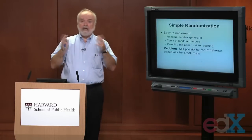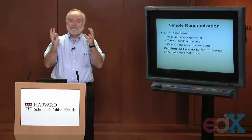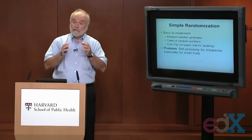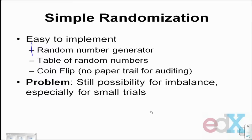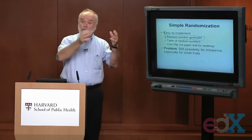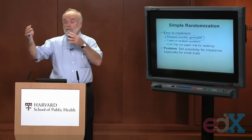How do we do the randomization? Naively, I've been describing an investigator flipping coins in the back of the room. In practice, that's not how it's done. It's done using a computer package to generate random numbers. If a randomly generated number is odd, that person might be assigned to the new treatment; if it's even, to the standard of care. So typically it's not a coin flip — it's an equivalent to a coin flip done electronically using a software package.